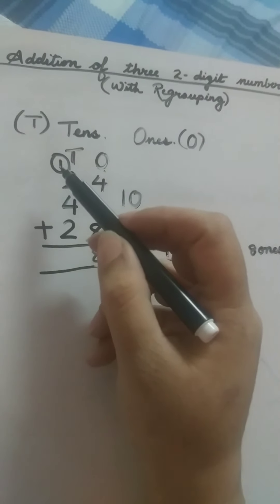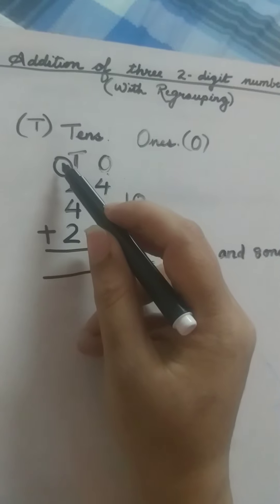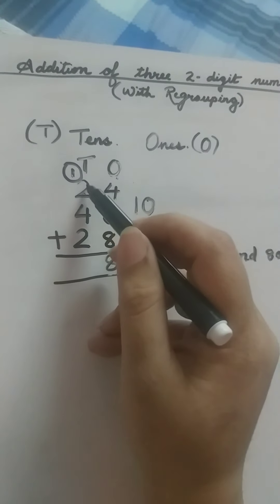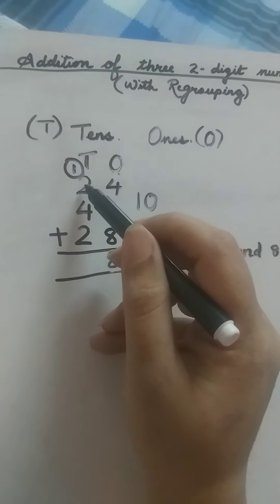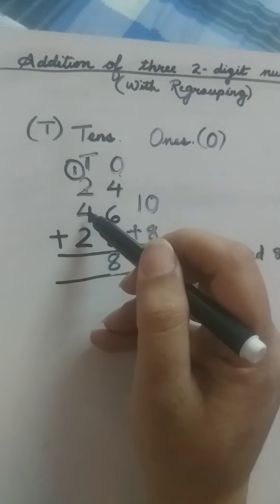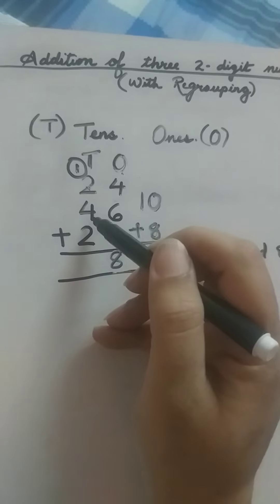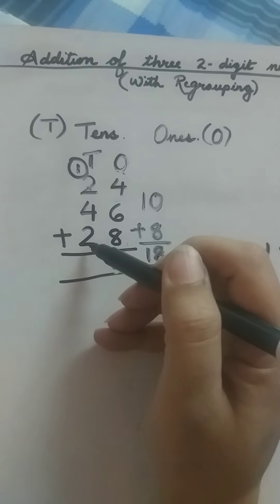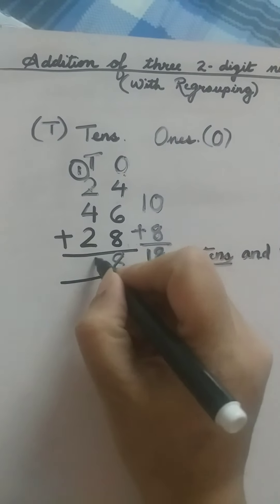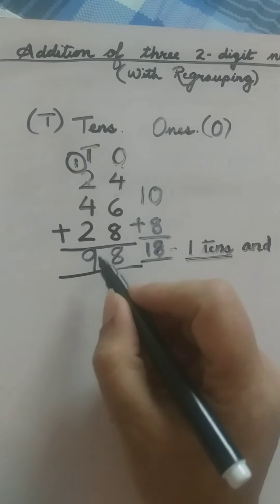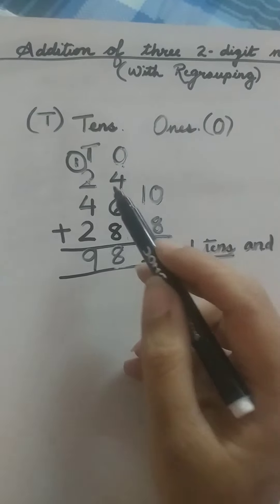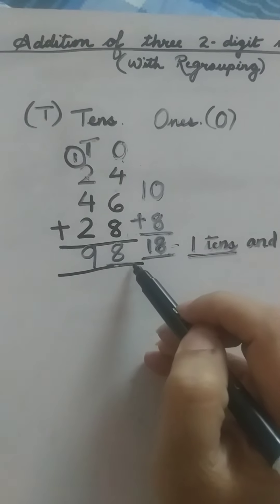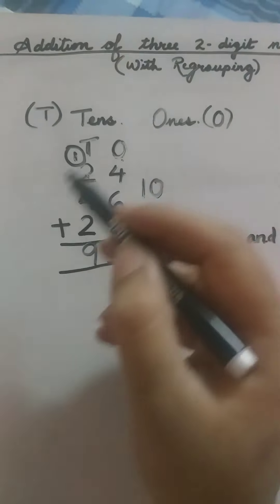Now we are going to add the tens place. We have one in the carryover place, so we are going to add this one first with two: one plus two is three. Then three plus four makes seven. And in that seven we have to add two, so seven plus two is equal to nine. Our answer is 98. Twenty-four plus forty-six plus twenty-eight is equal to 98.